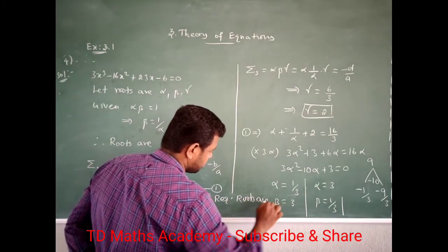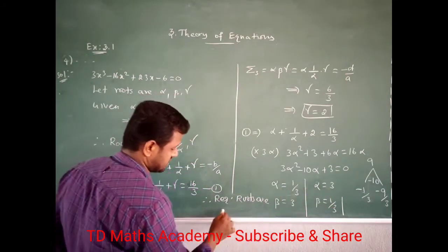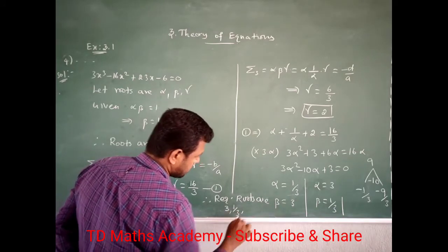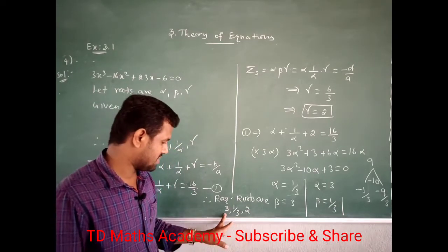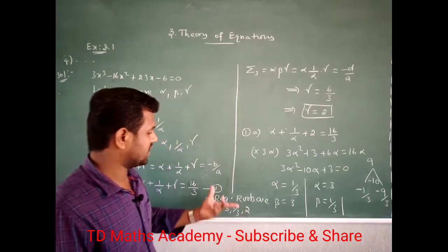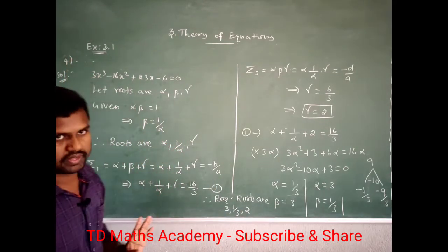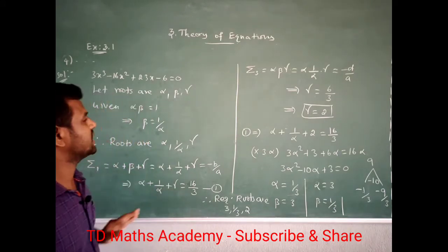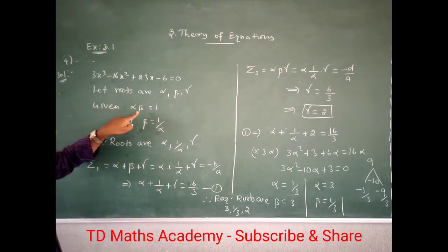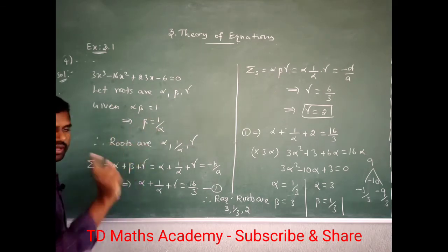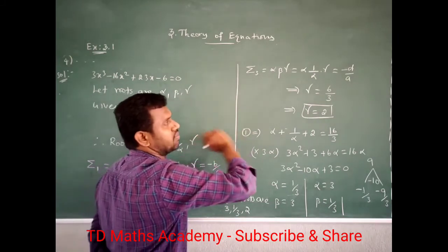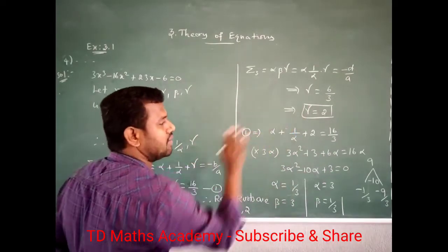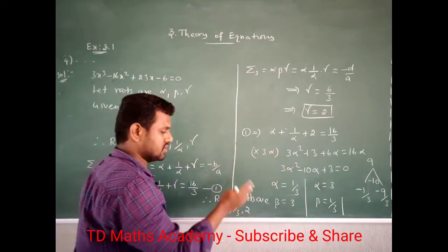Therefore the required roots are: alpha is 3, beta is 1 by 3, gamma is 2. So the required roots are 3, 1 by 3, and 2. To summarize: given information was alpha into beta equal to 1, so beta equals 1 by alpha. We used summation 1 formula minus B by A and summation 3 formula minus D by A to substitute and find gamma, then substituted back to find alpha and beta.